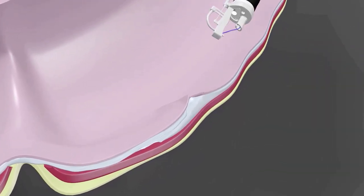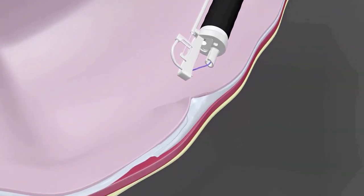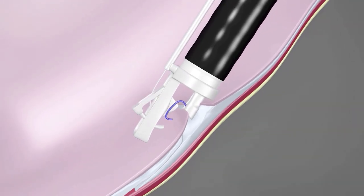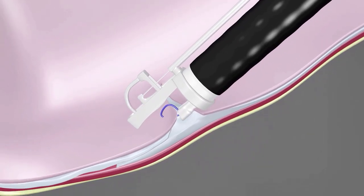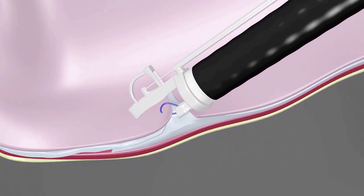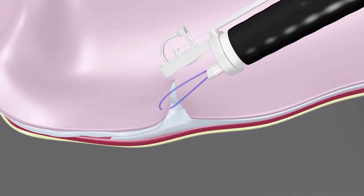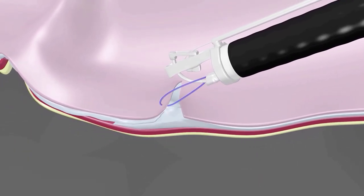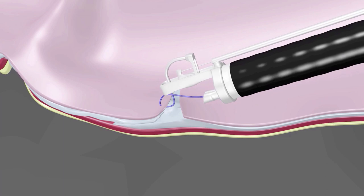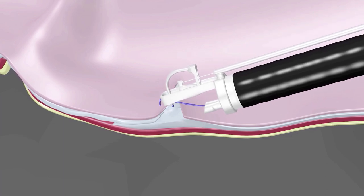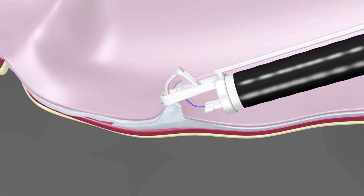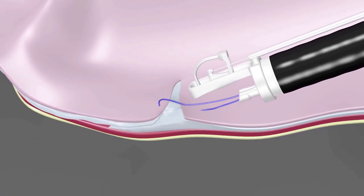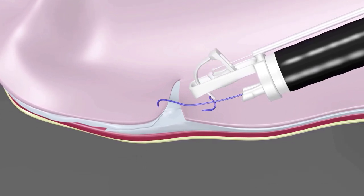The last step is closure of the defect. In this case, we use an endoscopic suturing device. We perform a running full-thickness suturing pattern, starting the suture from the distal part of the defect, then alternating stitches from the proximal and distal parts of the defect.